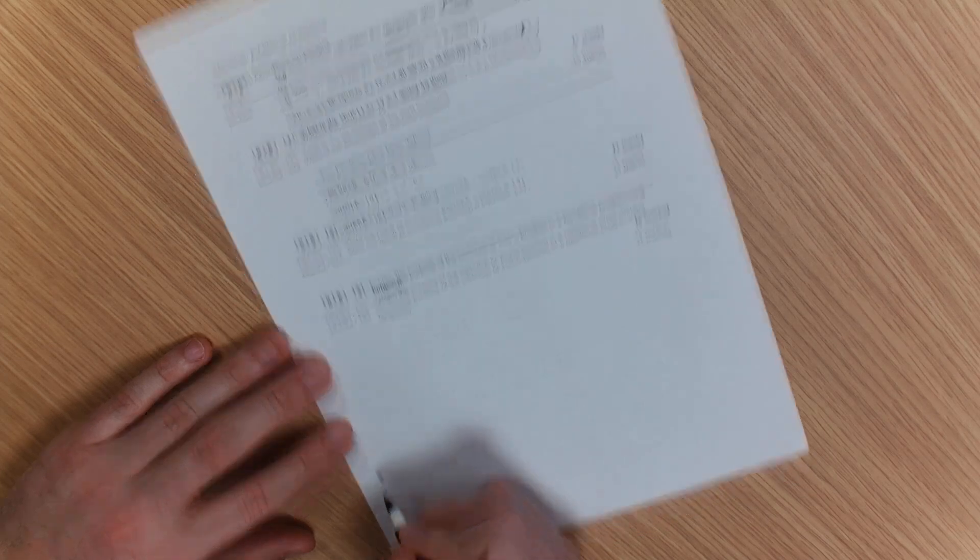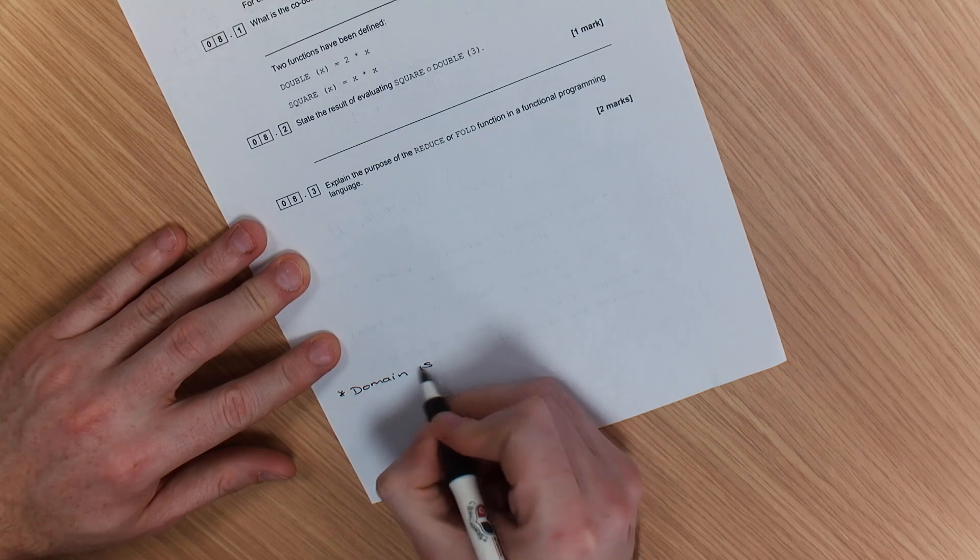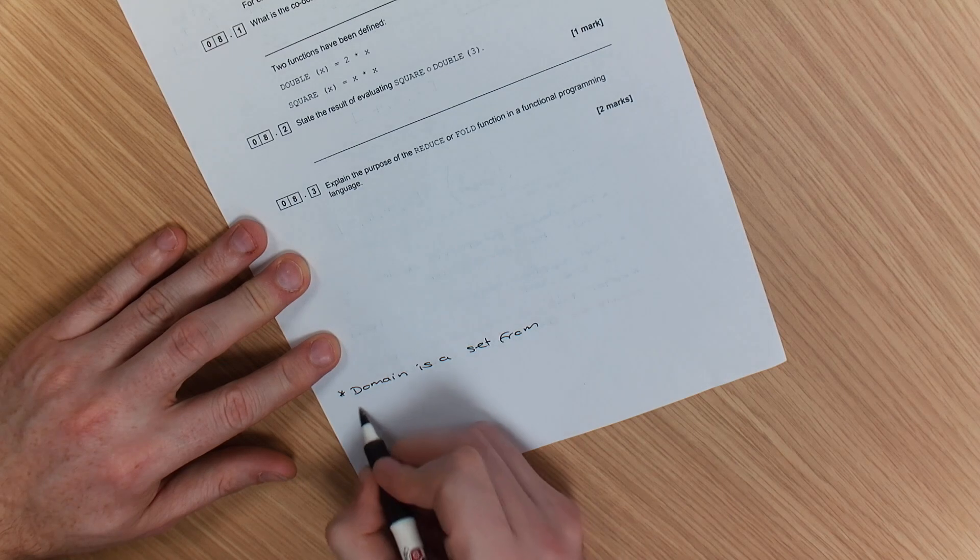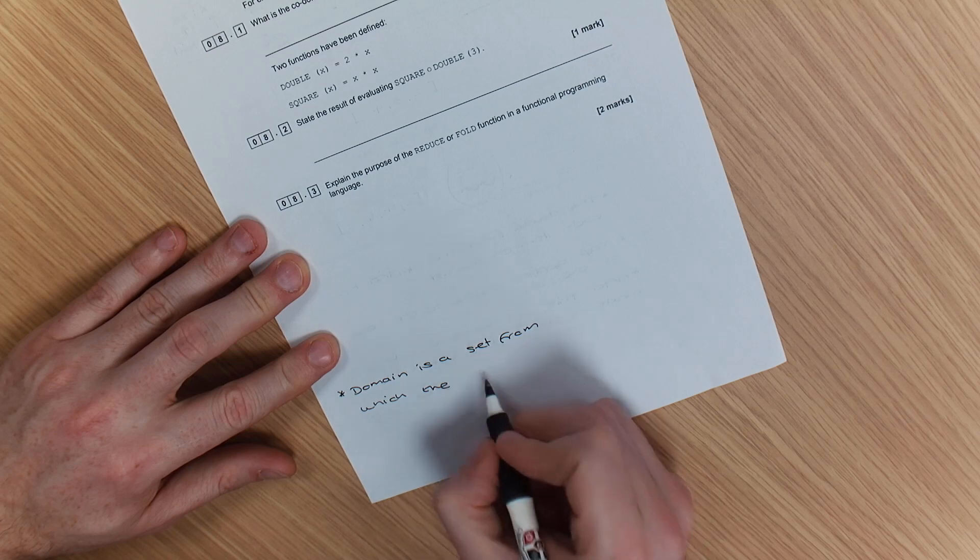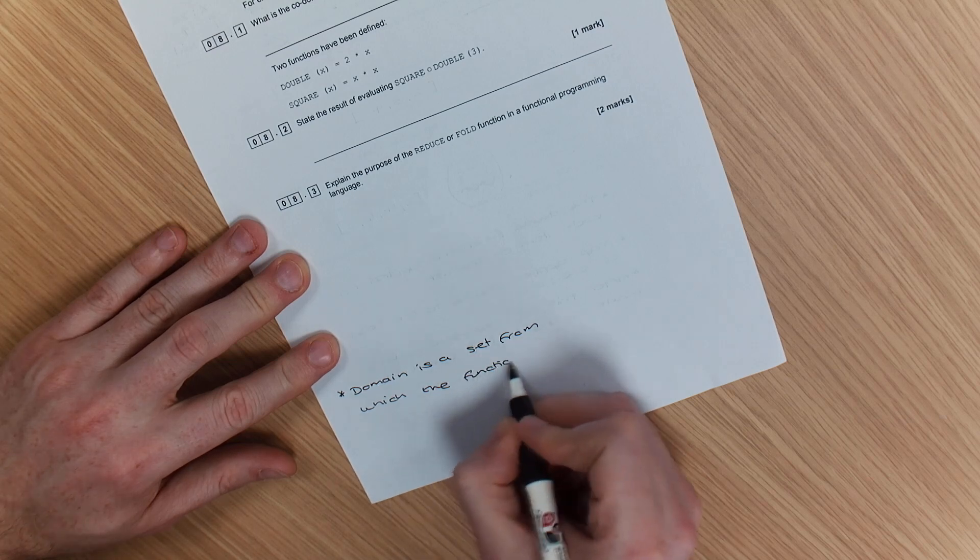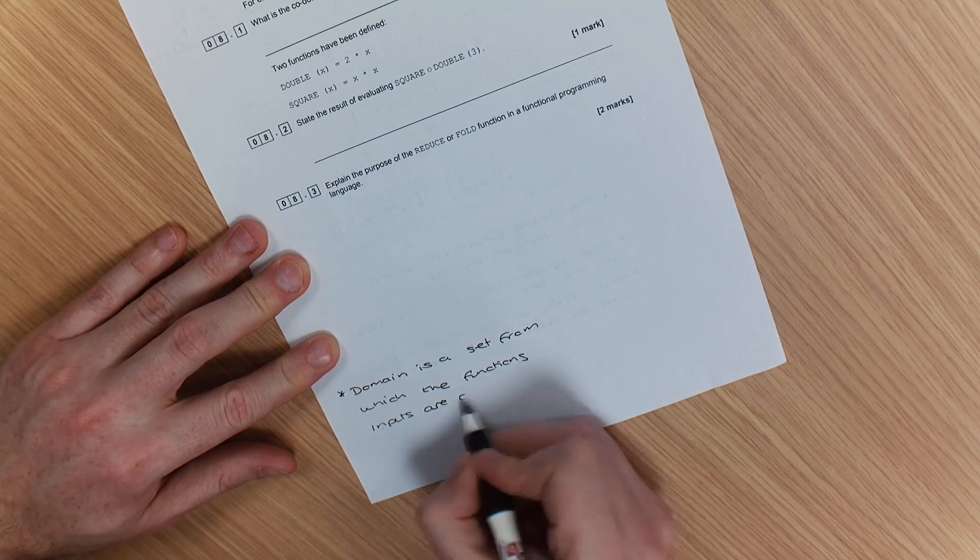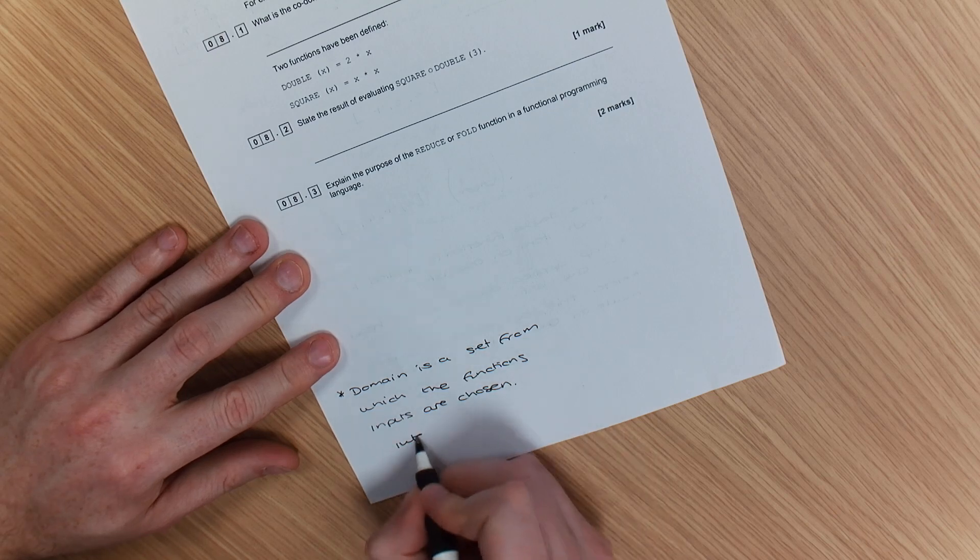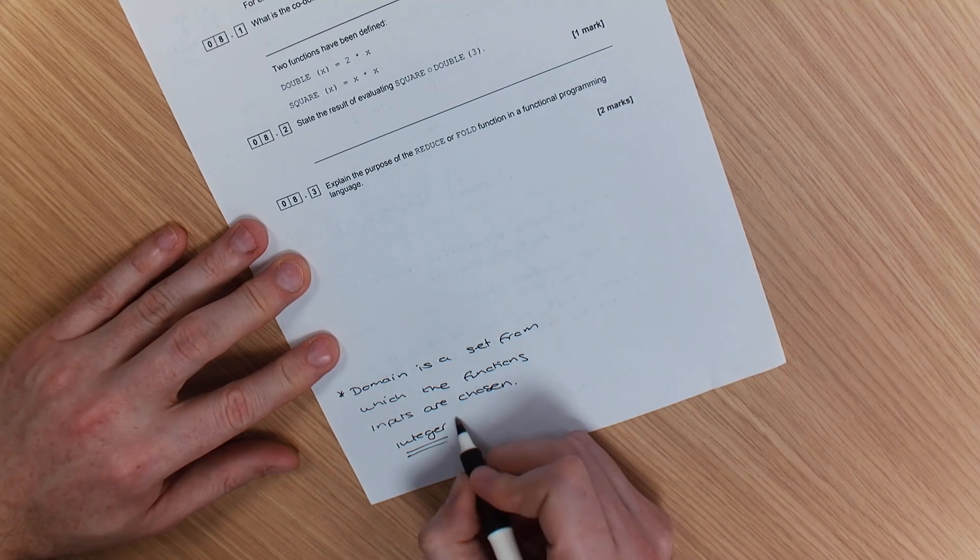I'm just going to write this down here, that the domain, the domain is a set from which the functions inputs are chosen. So in this case, the domain that's gone in has been an integer, a natural number. It's been a natural number in this case.